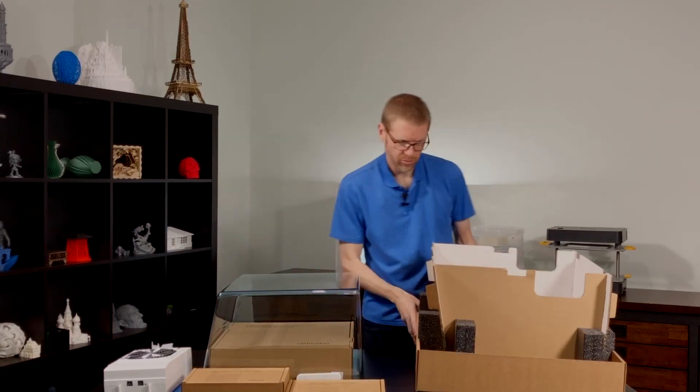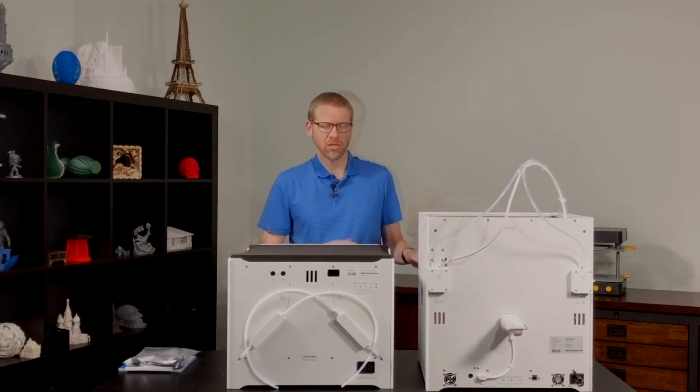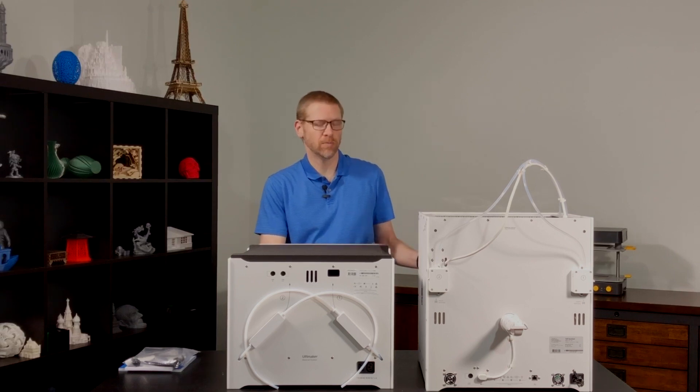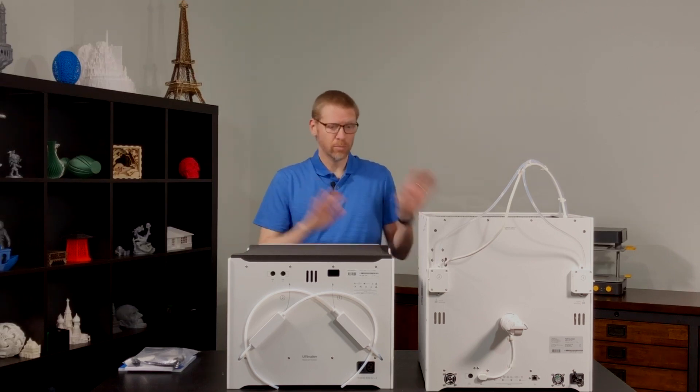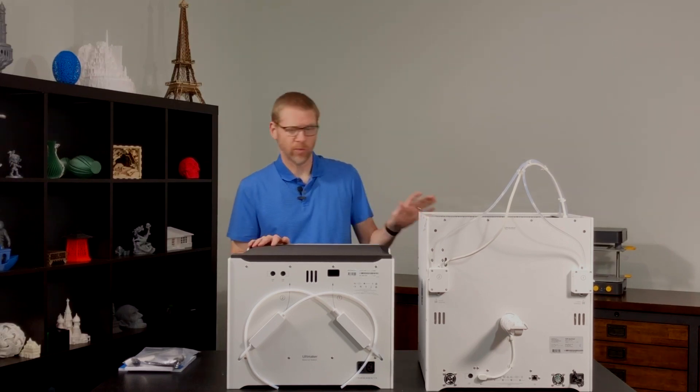We'll get this out of the way so we can assemble this. So we're going to start the assembly process. Now, it's critically important that you make sure that the firmware on your Ultimaker S5 has been updated to the latest available version before you connect the material station and air manager. I've already done that firmware update, so we're all ready to go here.